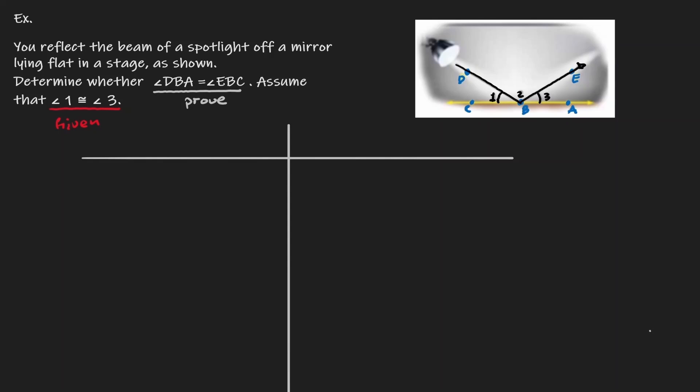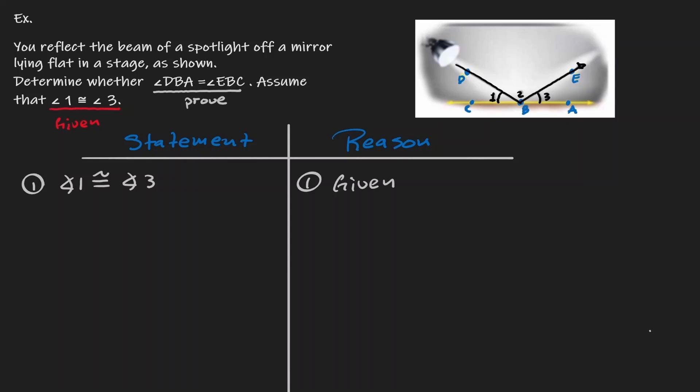Let's set up our table. For the T-table, on the left-hand side we have 'statement' and on the right-hand side we have 'reason.' Just like we did with the algebraic problem, we're going to list different statements and give a backup as to why those statements are true. The first statement we always start with is the given. We know that angle 1 is congruent to angle 3, so my first statement is: angle 1 is congruent to angle 3 — and the reason is that's what's given. The first line within your proof is always what you are being given.